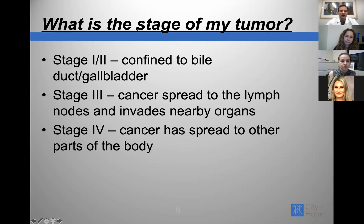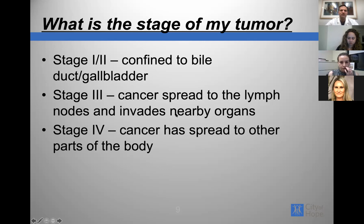Regarding staging: early-stage cancers are stage one or two, typically confined to the bile duct or gallbladder. Stage three cancers have spread through the lymph nodes or invade nearby organs but haven't spread to distant parts of the body. Stage four is cancer that has spread to other parts of the body, meaning the cancer cells are no longer contained and are acting on their own.